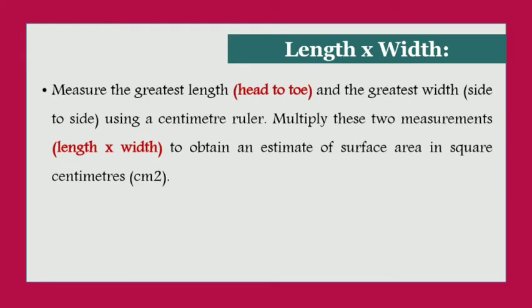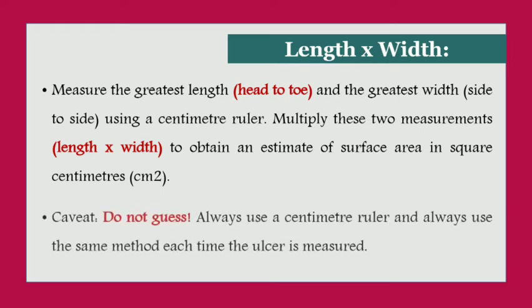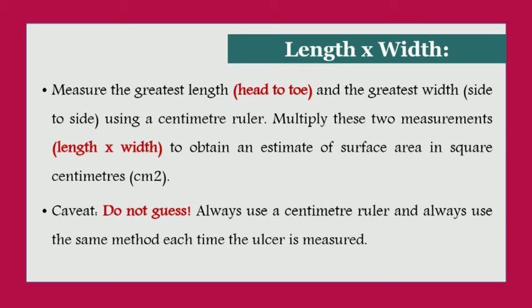The first parameter is length × width. You measure the greatest length from head to toe and the greatest width from side to side using a centimeter ruler, then multiply the two to get the estimated surface area in square centimeters. The warning is that you should not guess — always use a ruler and use the same method each time the ulcer is measured.